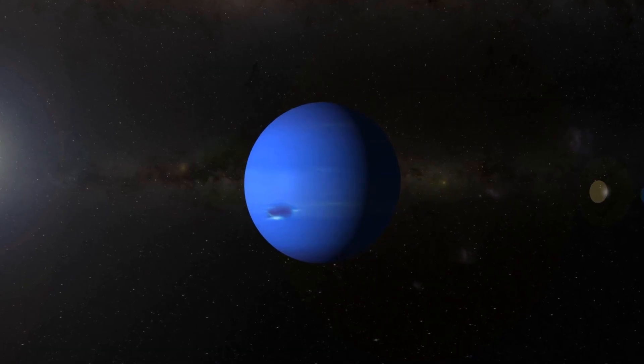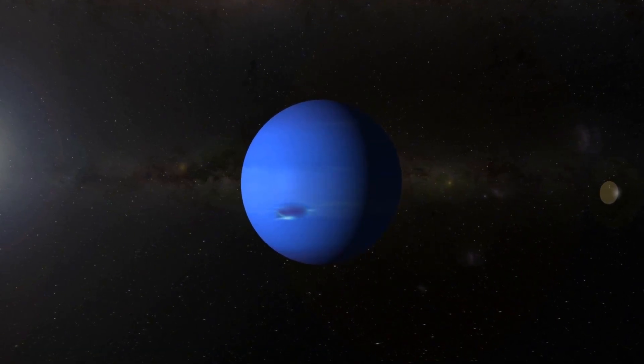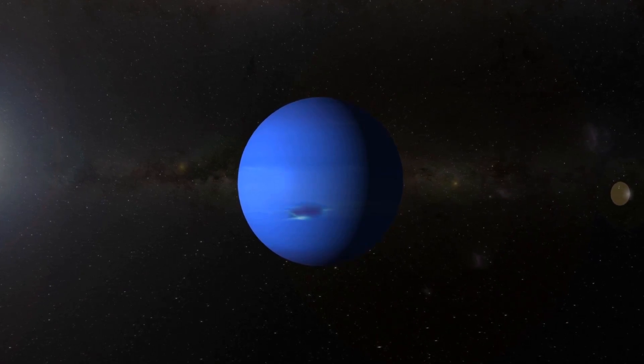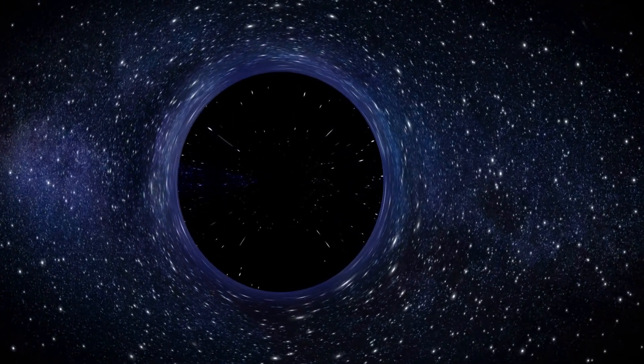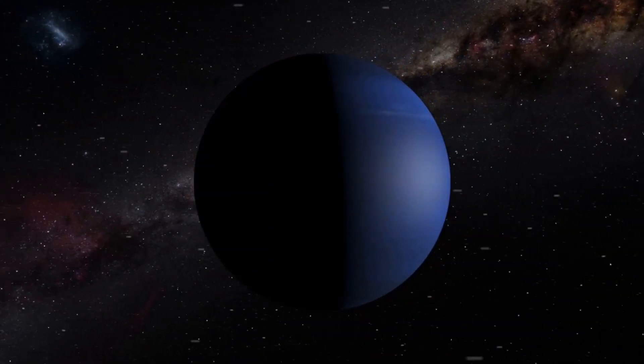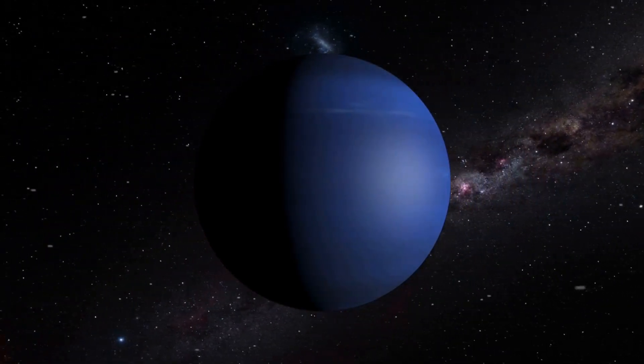Neptune may not just be a planet. It could be something entirely new, a bridge between planets and brown dwarfs, an object that generates its own energy, its own weather, and a wholly unique magnetic field. And if Neptune is this different from what we expected, what else are we still missing?